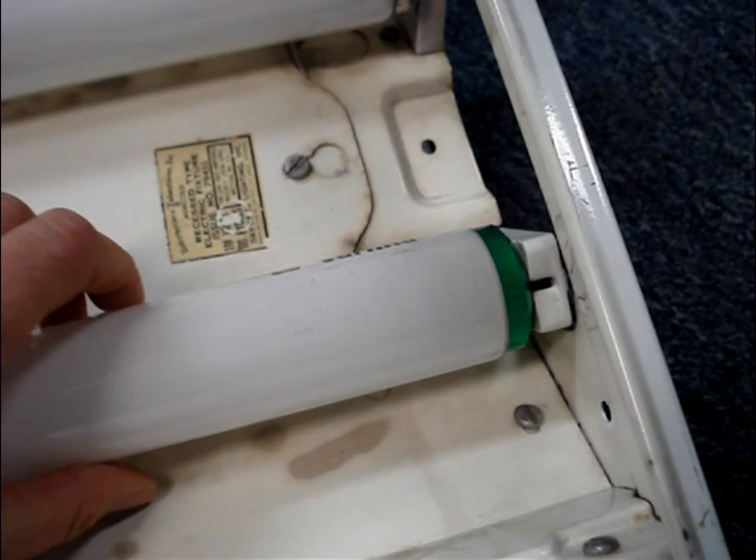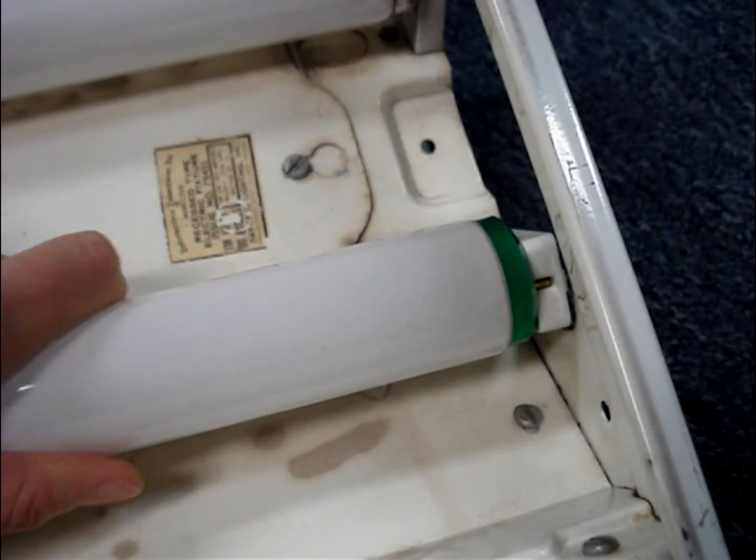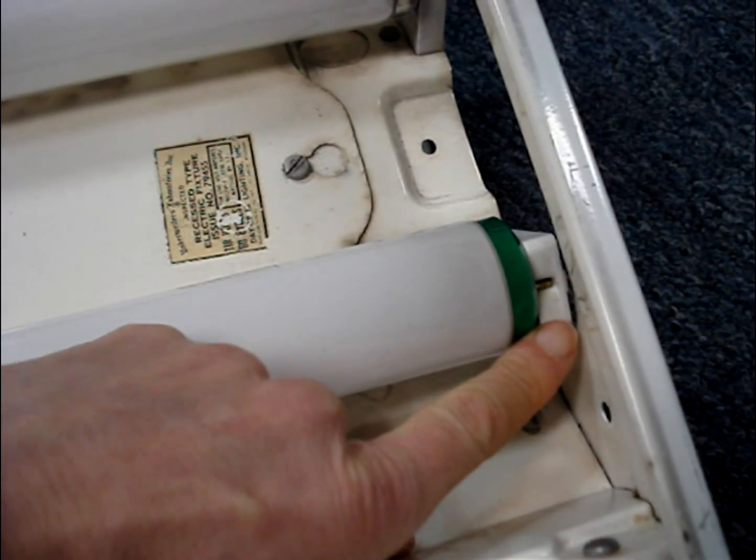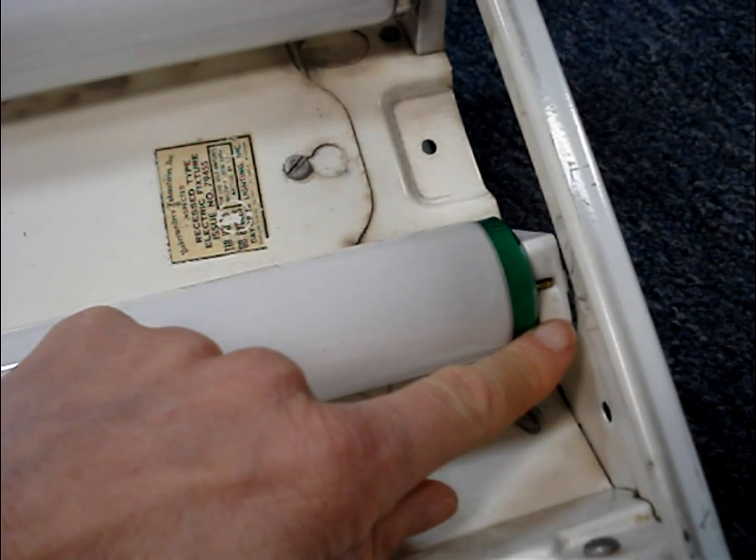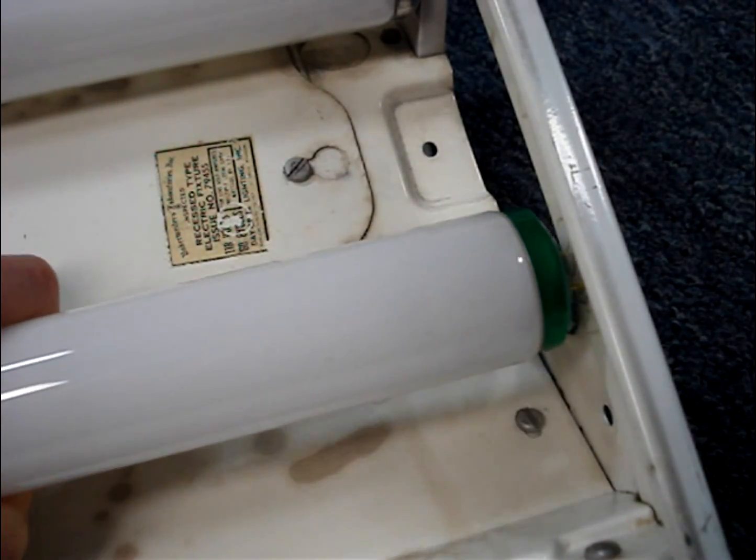Remove the fluorescent tubes by turning them a quarter turn until you see the gold pin in the tombstone. Then just lift the bulb out.